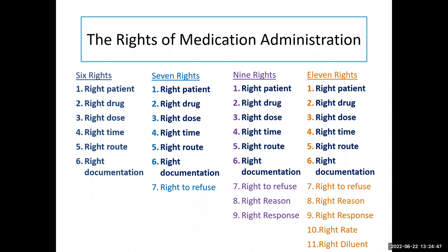Going to the seven rights, what's added is the right to refuse. That is a right that's been added, and it's not wrong — but the medication error is not going to happen if you don't do number seven. The medication error will happen if you don't do one of the first six. The patient does have a right to refuse, but that really comes under patient autonomy and patient rights more so than a medication right — because they can refuse anything: certain tests, physical therapy, being discharged, or being in the hospital at all.